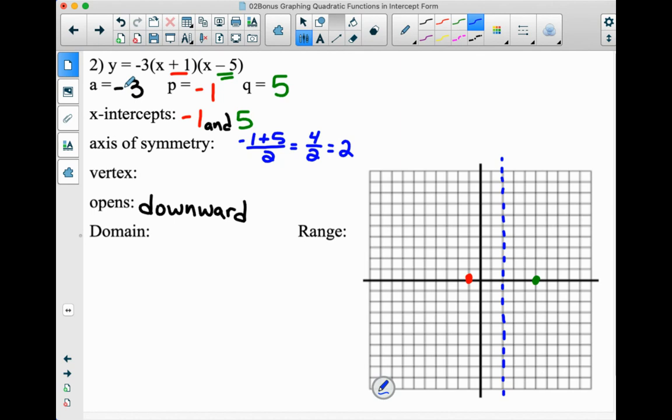So 2 will be our axis of symmetry that will perfectly split that graph in half. Now when we're finding the vertex, remember we substitute in that value for X. So Y equals negative 3 times X plus 1 times X minus 5. 2 plus 1 is 3. 2 minus 5 is negative 3. If we multiply these all together, we get positive 27.